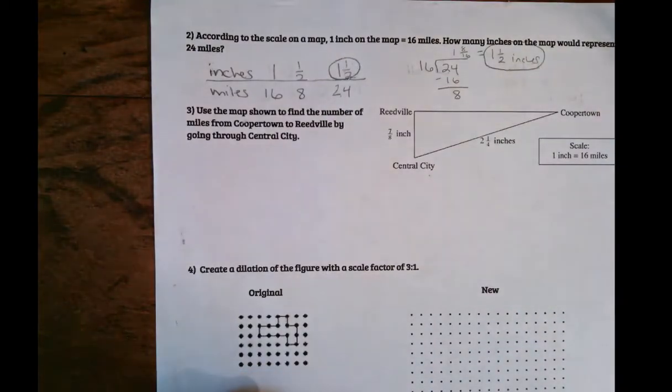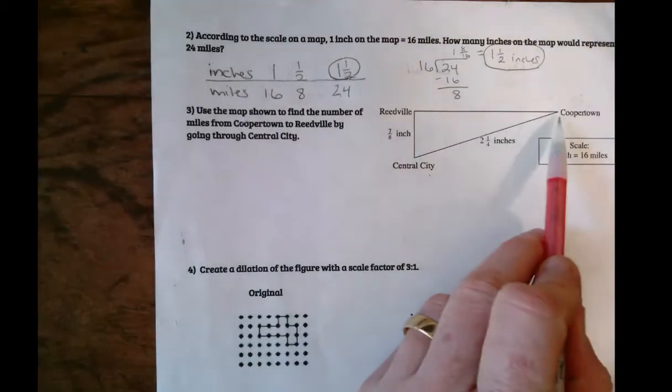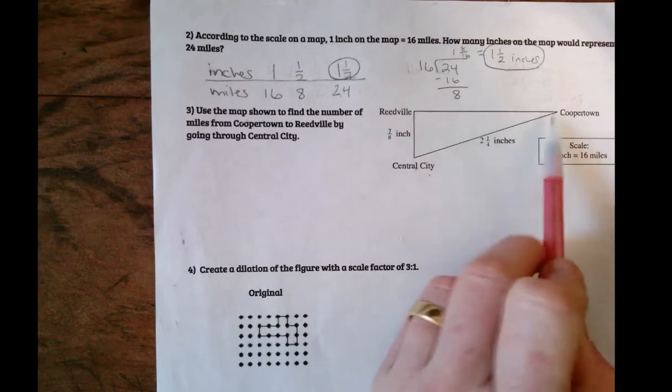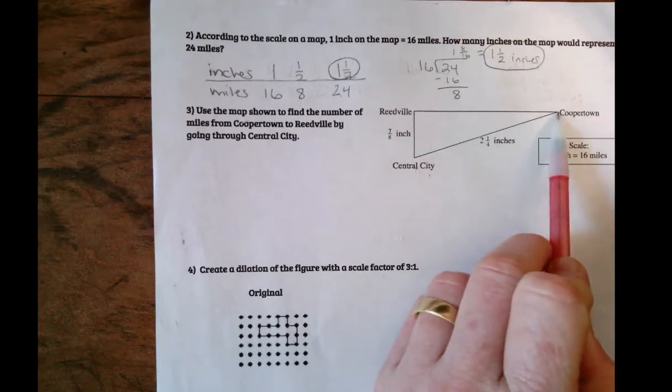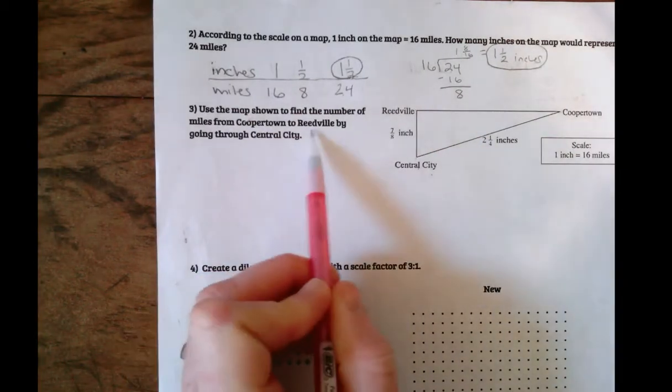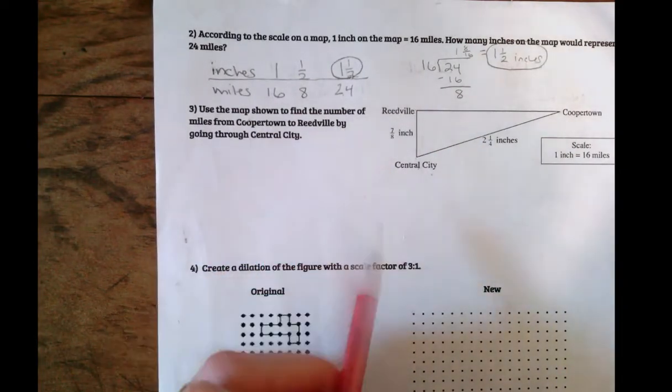Here's a map shown to find the number of miles from Cooperstown to Reedville by going through Central City. So we have to go from Cooperstown to Central City to Reedville. That's what it means by going through Central City.